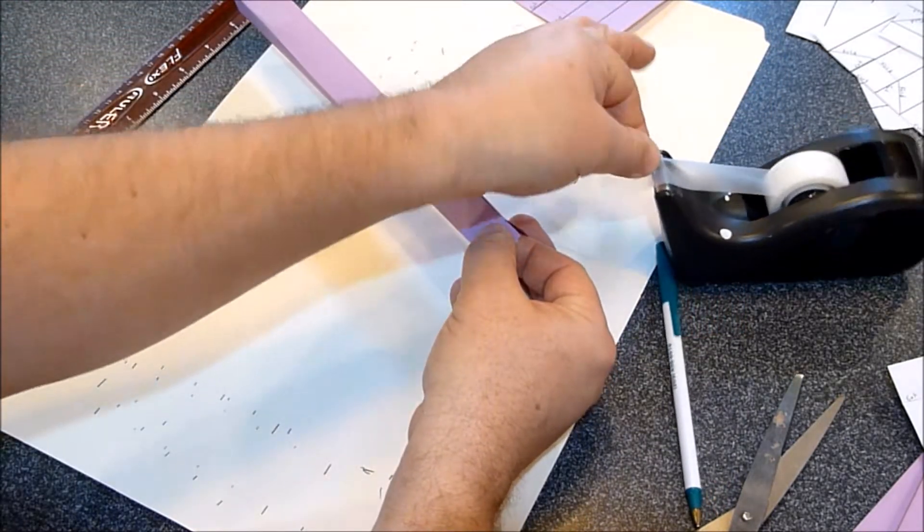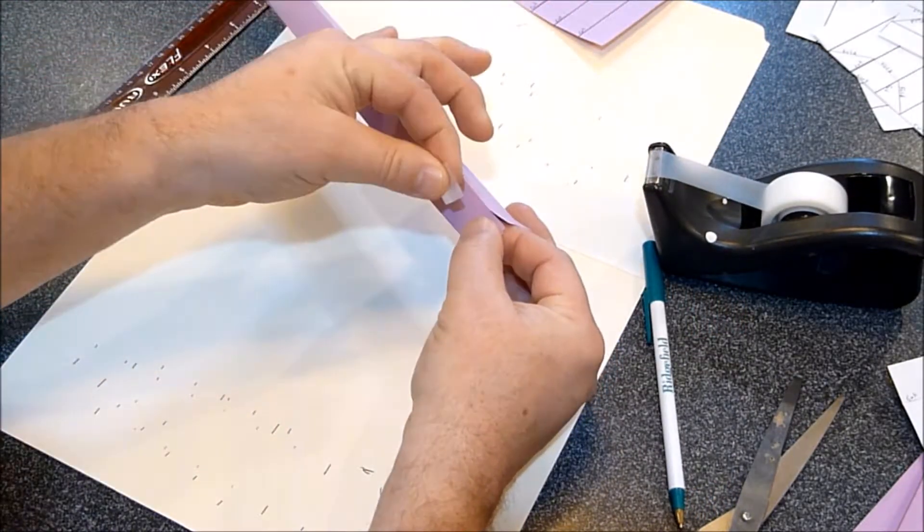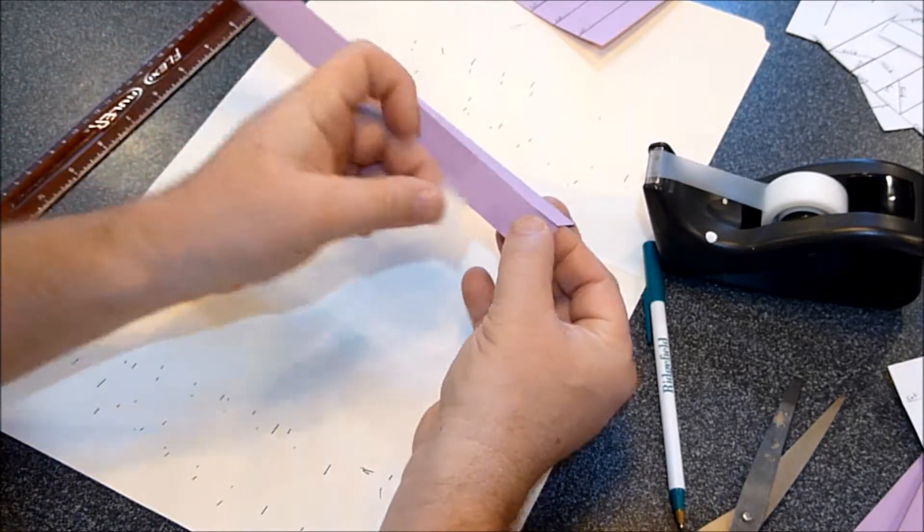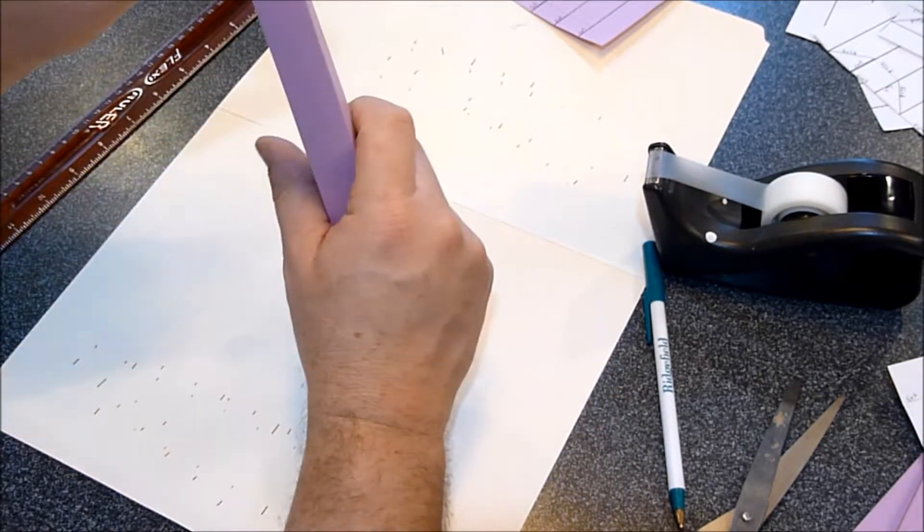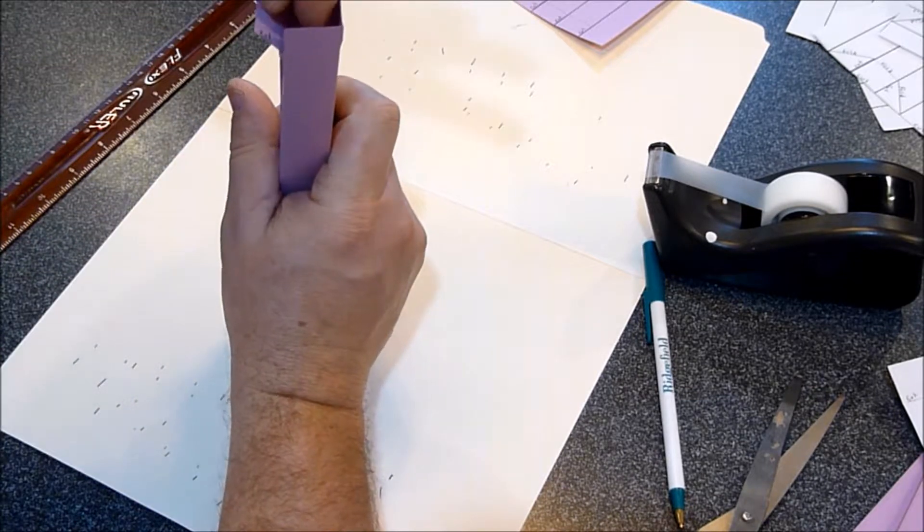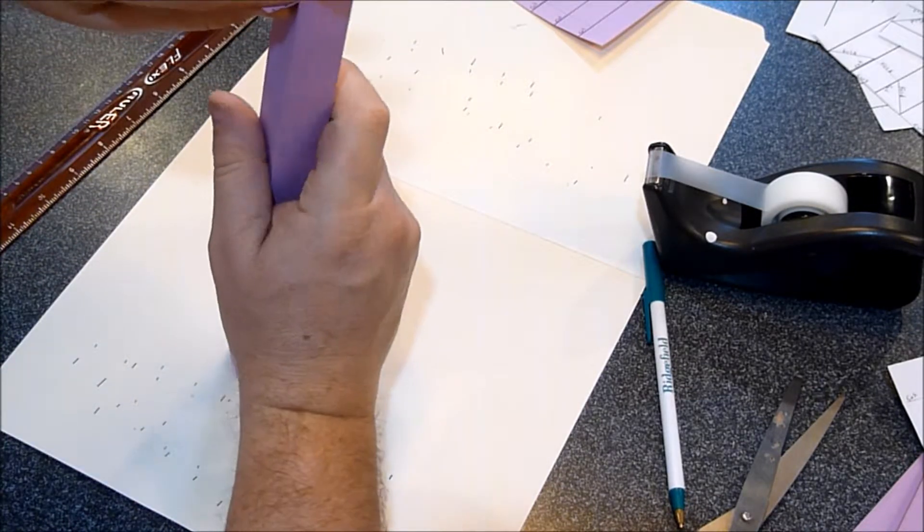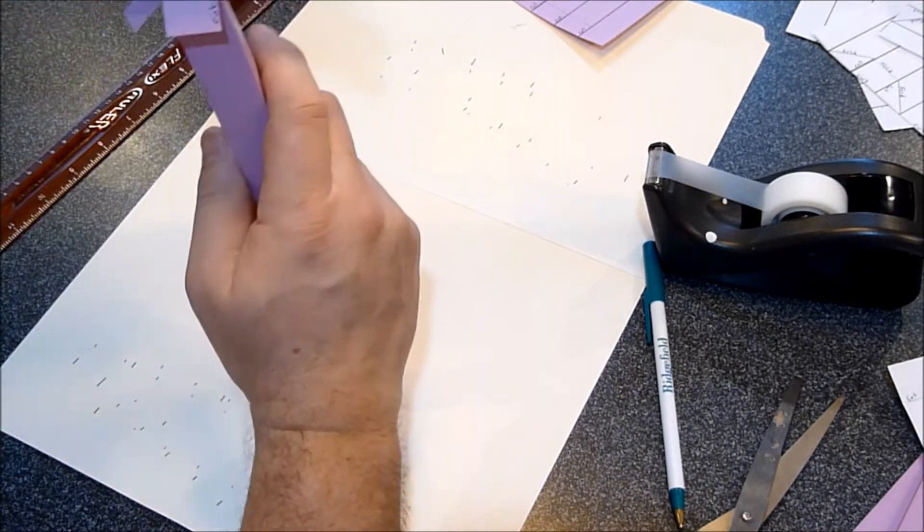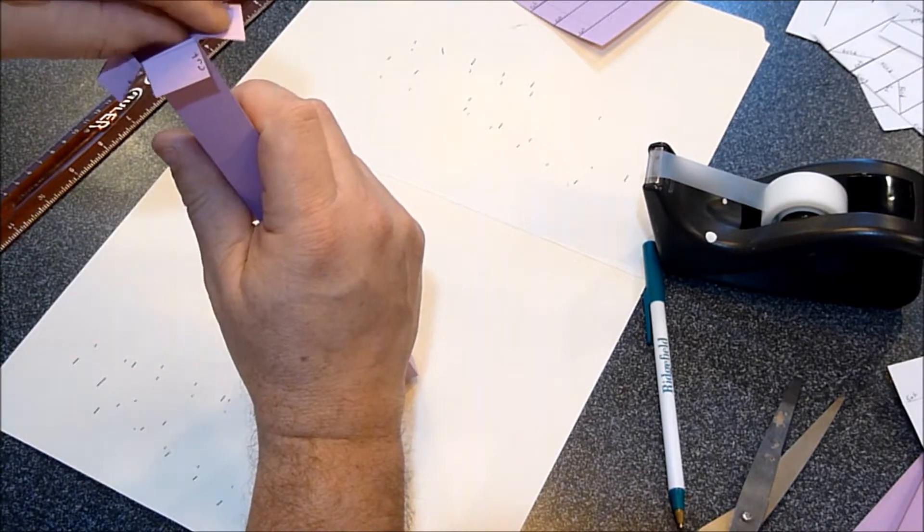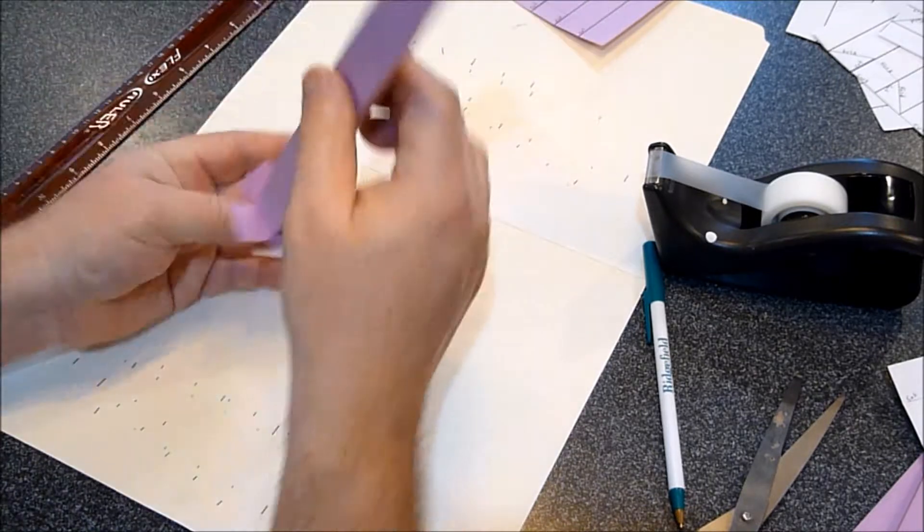Once you've done that, then you can just feather out the bottom. And these are what you'll tape down to the ground or down to your base to hold it in place.